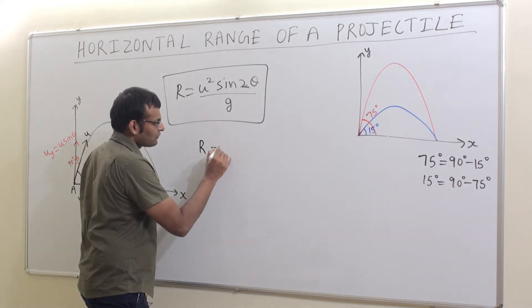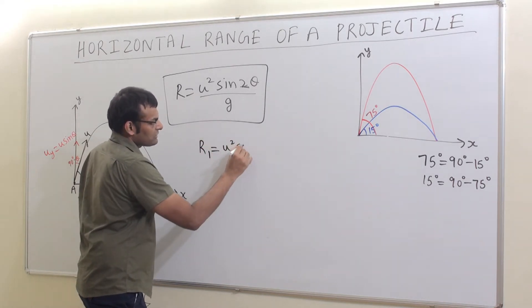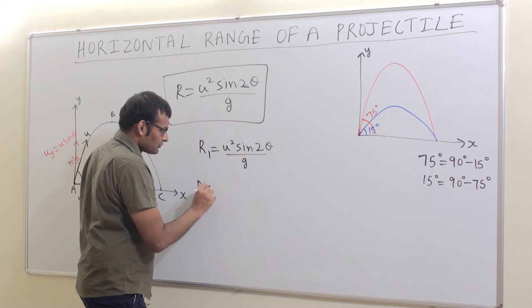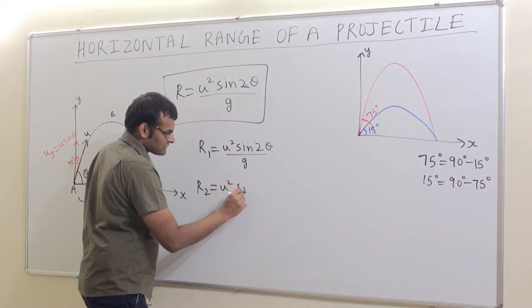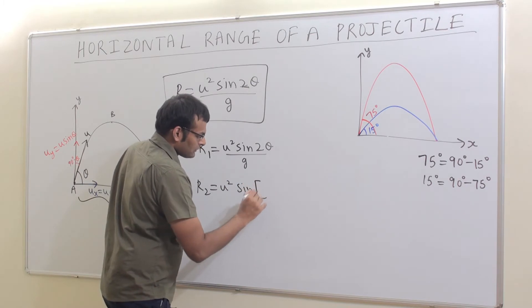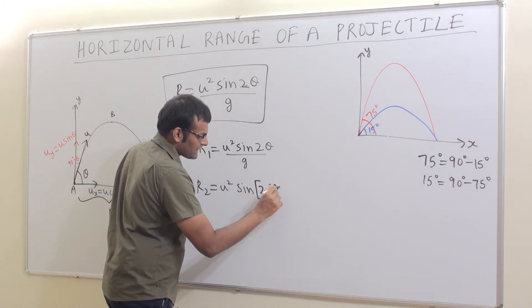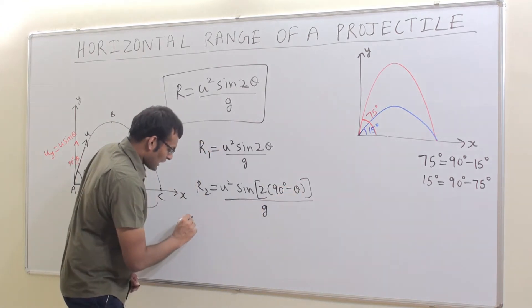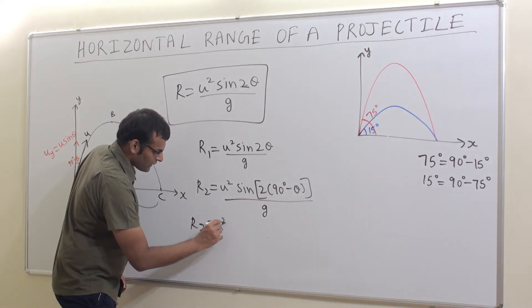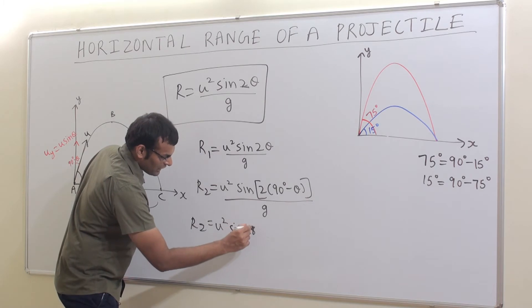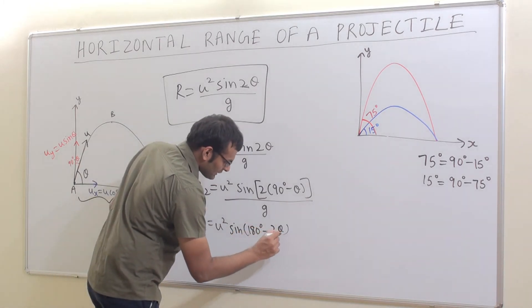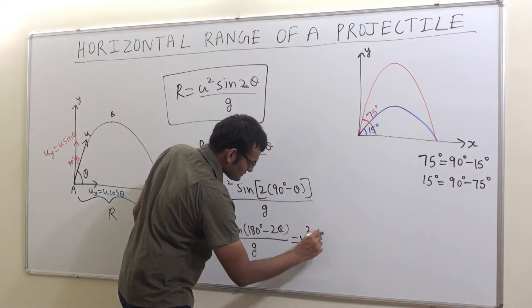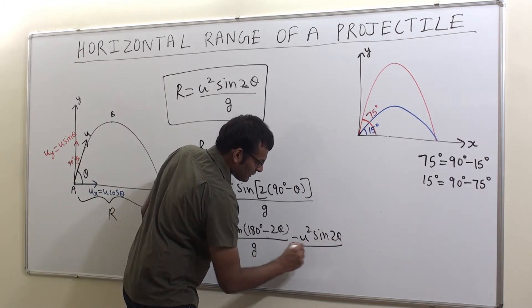Let R1 = u² sin2θ / g. And let R2 = u² sin(2(90° − θ)) / g = u² sin(180° − 2θ) / g. This turns out to be u² sin2θ / g.